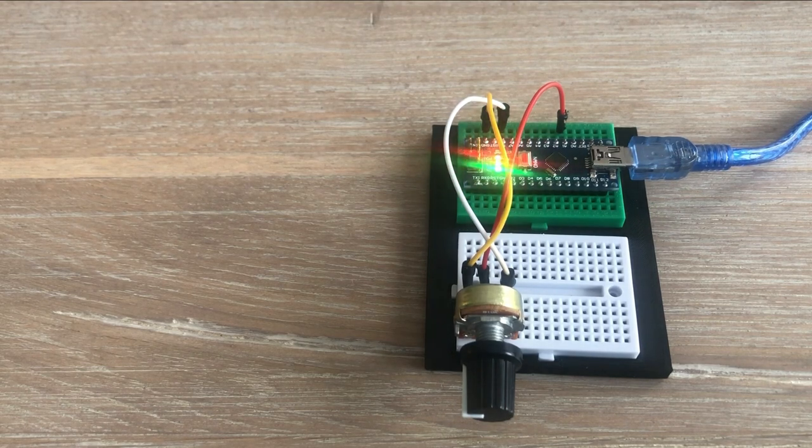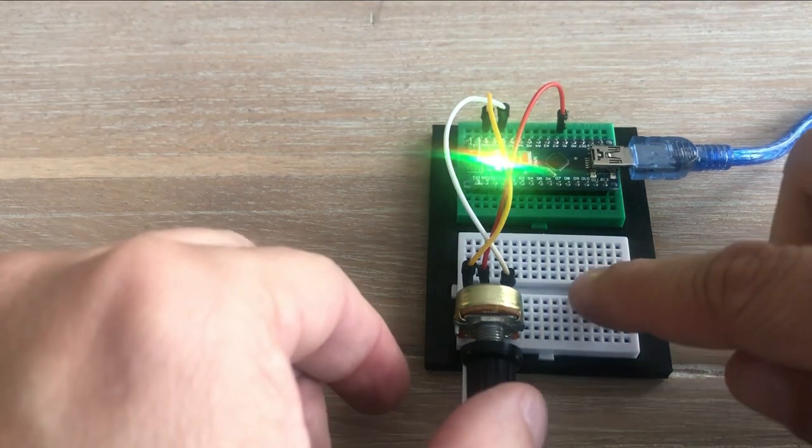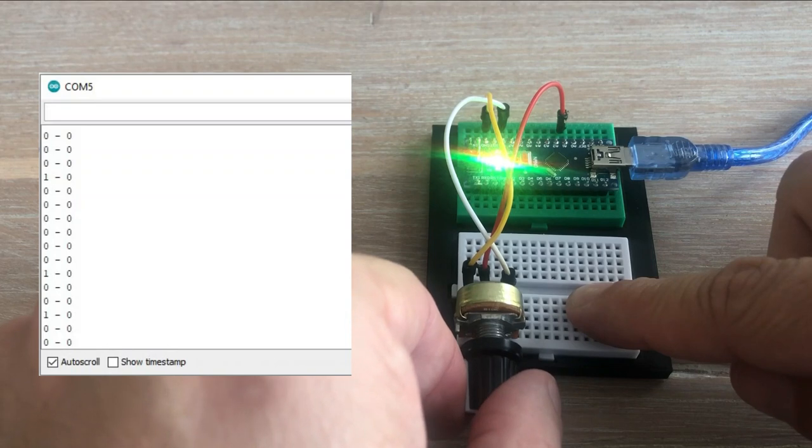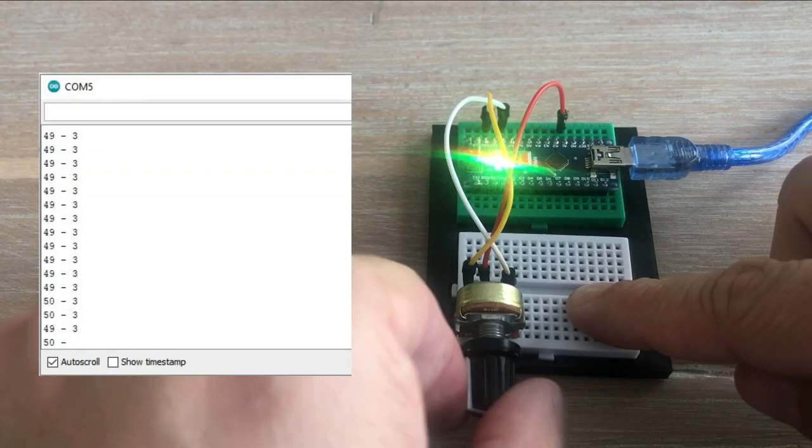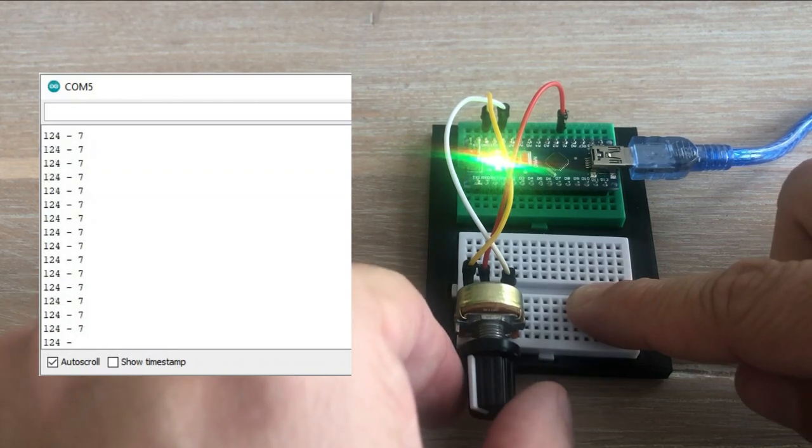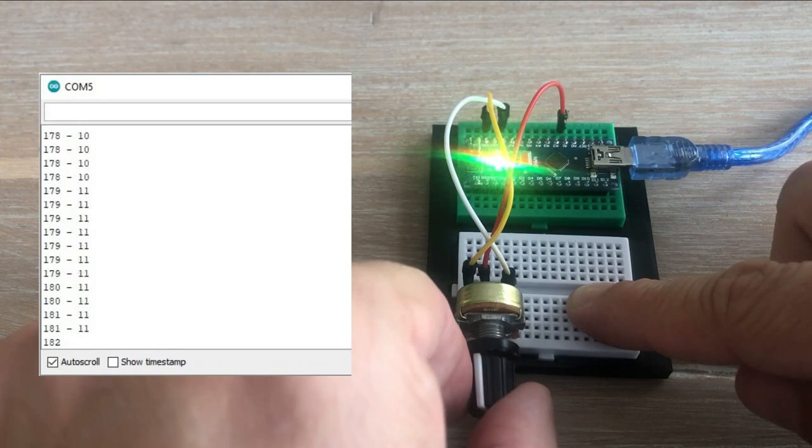Let's use the map function in our sketch to output the mapped value alongside the pot reading. Let's load the code. We can see properly mapped values alongside pot readings produced by analogRead commands.